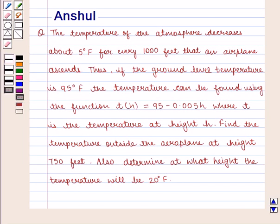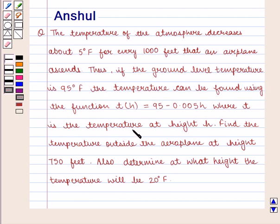Hello and welcome to the session. In this session we are going to discuss the following question: the temperature of the atmosphere decreases about 5 degrees Fahrenheit for every 1000 feet that an airplane ascends. Thus if the ground level temperature is 95 degrees Fahrenheit, the temperature can be found using the function T of H is equal to 95 minus 0.005H, where T is the temperature at height H. Find the temperature outside the aeroplane at height 750 feet. Also determine at what height the temperature will be 20 degrees Fahrenheit.